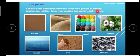What is the difference between these two groups of natural substances? Leather, jute, wool, and cotton - we obtain from living things. And soil, water, and metals - these are non-living things. If you compare these, all are obtained from living things and these three are obtained from non-living things.